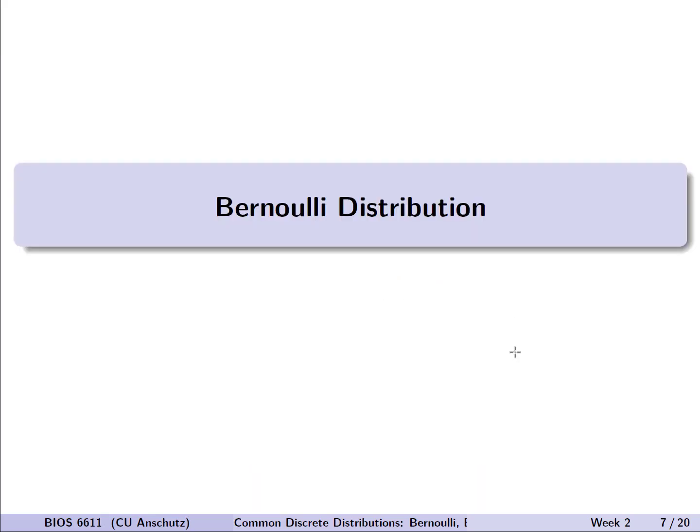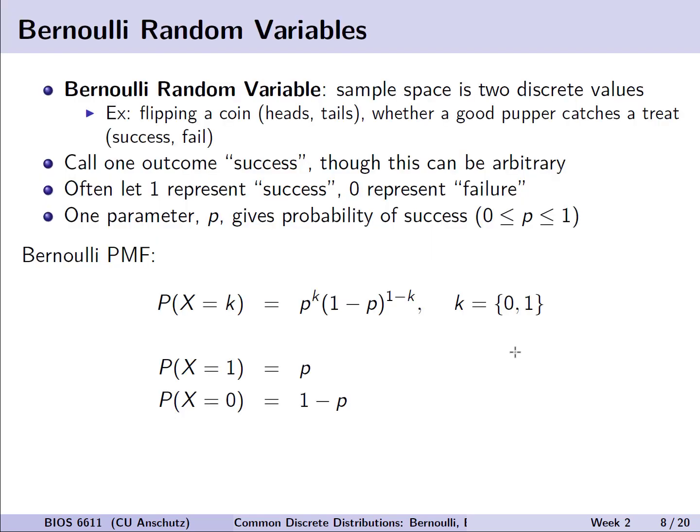With that brief recap of what a discrete random variable is, let's dig into some named distributions starting with the Bernoulli distribution. A Bernoulli random variable or distribution is one where the sample space is composed of two discrete possible values. For example, it might be like our coin flipping example where it's either heads or tails, or whether a good pupper is able to catch a treat you toss their way, a success or a failure.